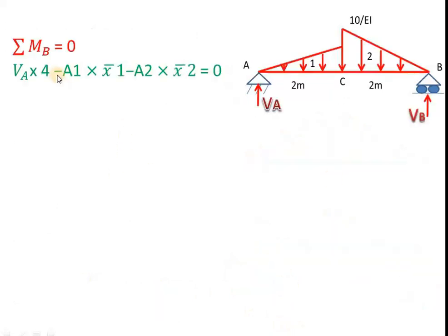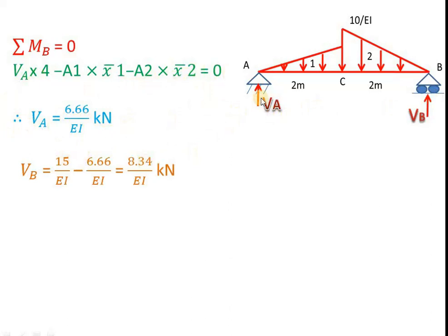Now to calculate the reactions, I take sigma MB = 0. This gives VA × 4 minus this load times the distance of the centroid of that load to B, which is A1 × x1 bar, minus A2 × x2 bar. Substituting values of A1, x1 bar, A2 and x2 bar, we get VA = 6.66 by EI. Then by sigma Fy = 0, VA plus VB equals total downward load — the sum of areas of both triangles, which is 15 by EI. So VB = 15/EI − 6.66/EI = 8.34 by EI.